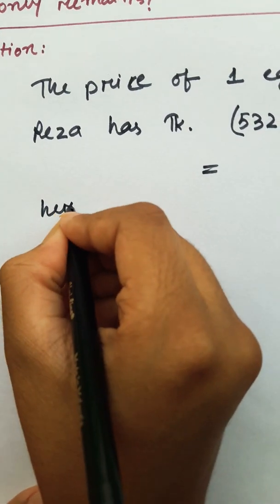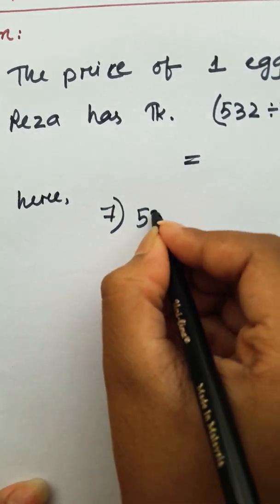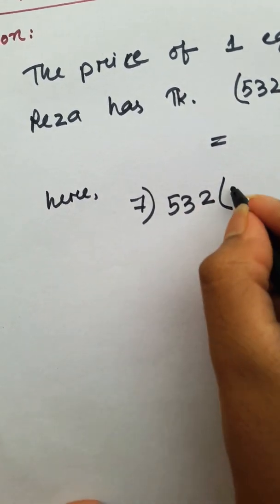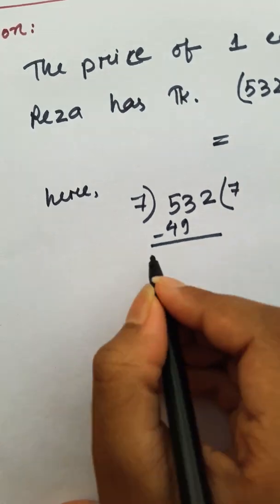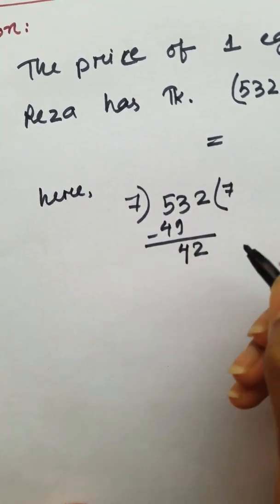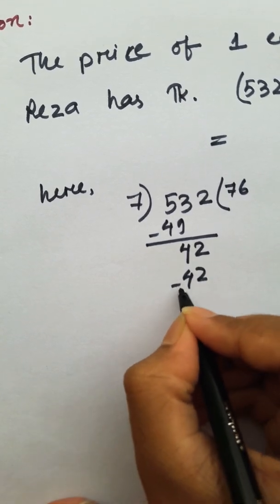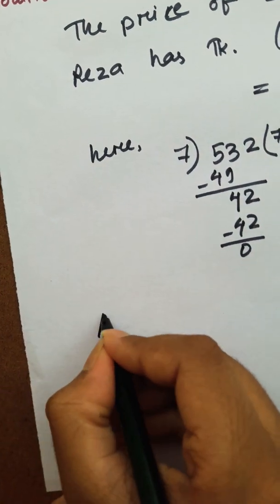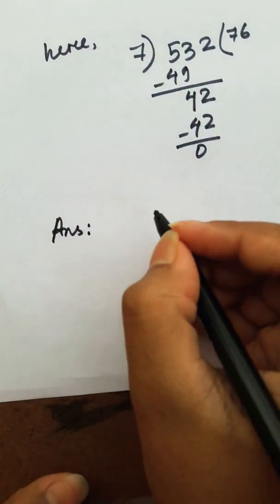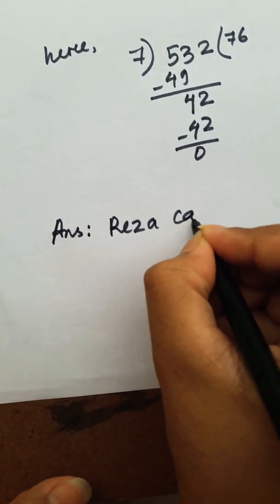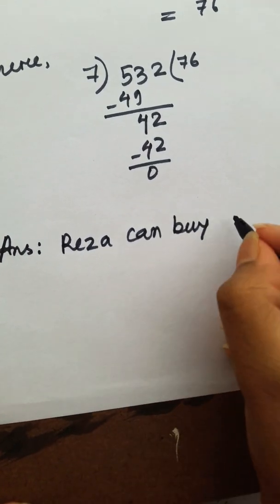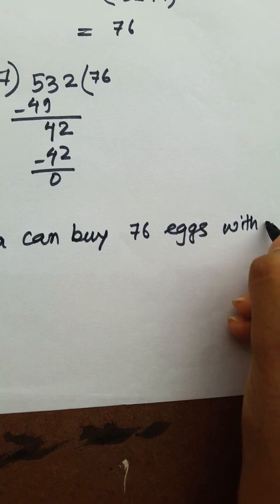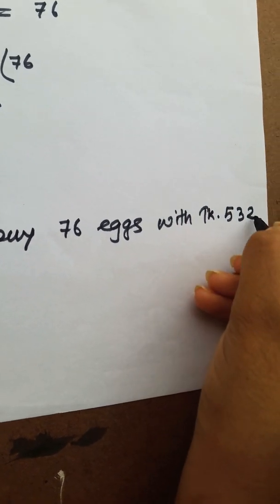Here, 7 goes into 532. 7 times 7 is 49. Remaining 4. 8 times — bring down: 42. 7 times 6 is 42, remainder 0. Answer: Reza can buy 76 eggs with Taka 532.